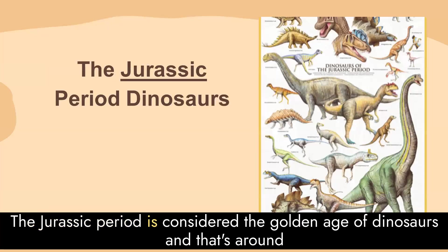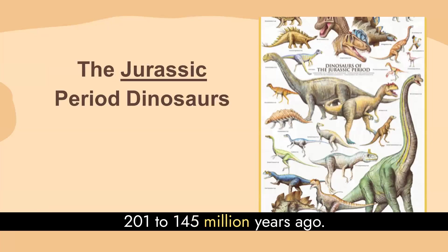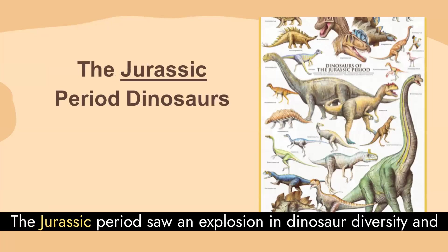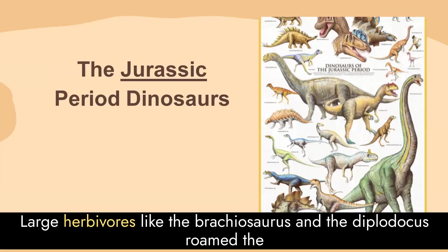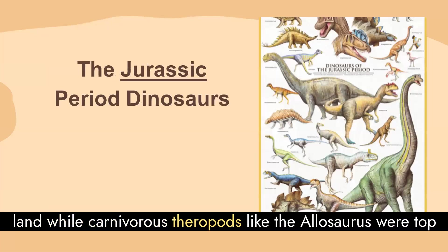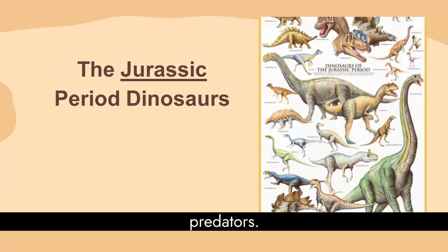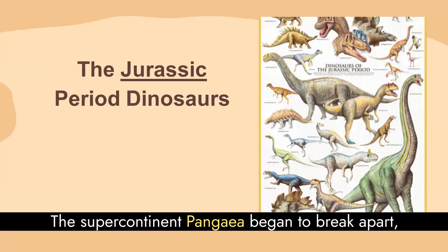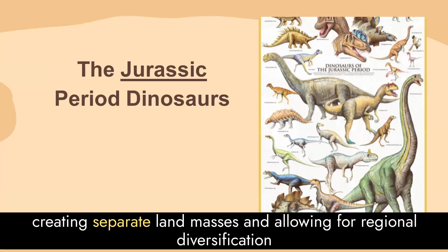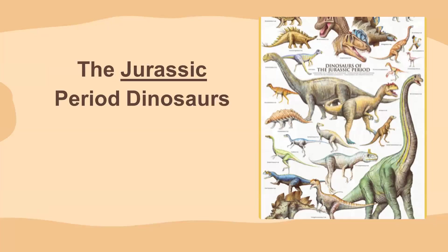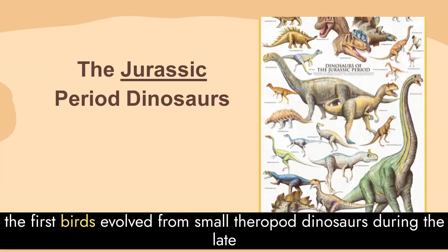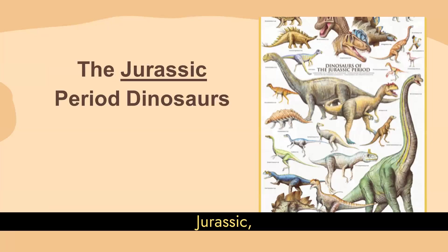The Jurassic period is considered the Golden Age of Dinosaurs, running from around 201 to 145 million years ago. The Jurassic period saw an explosion in dinosaur diversity and dominance. Large herbivores like the Brachiosaurus and the Diplodocus roamed the land, while carnivorous theropods like the Allosaurus were top predators. The supercontinent Pangea began to break apart, creating separate landmasses and allowing for regional diversification of dinosaur species. Interestingly, the first birds evolved from small theropod dinosaurs during the late Jurassic.